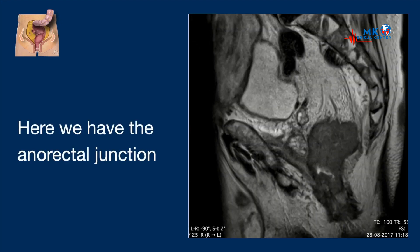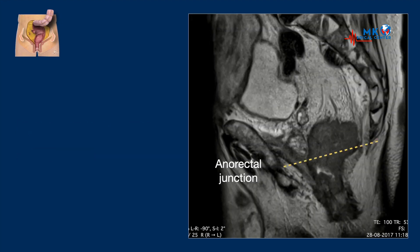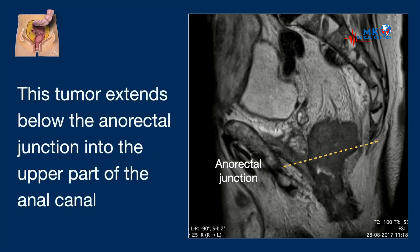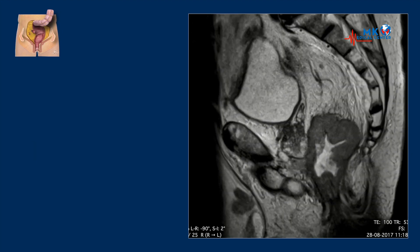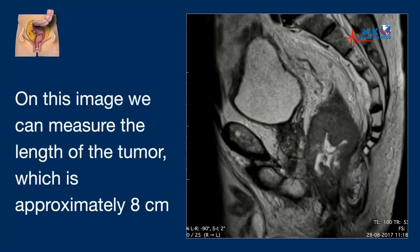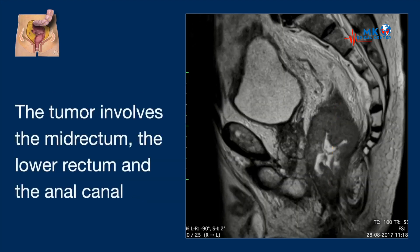Here we have the anorectal junction. This tumor extends below the anorectal junction into the upper part of the anal canal. We can measure the length of the tumor which is approximately 8 cm. The tumor involves the midrectum, the lower rectum and the anal canal.